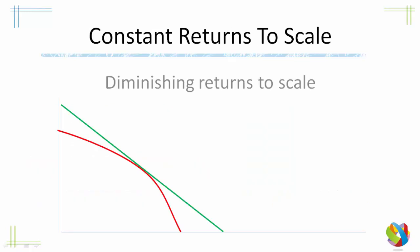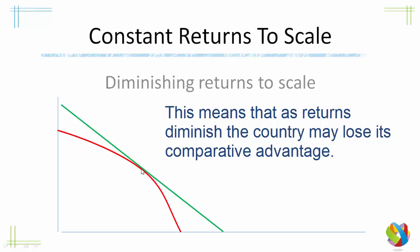The theory also assumes constant returns to scale. Looking at this green line here, it signifies that the more resources we throw at coffee production, the more production goes up in step with those resources. But in reality this doesn't happen. When you first start to produce a crop, you tend to put it on the best available land, so you get the best yield. As you try to produce more, you use less viable land, so your yield decreases — we are getting diminishing returns to scale, not constant returns to scale.